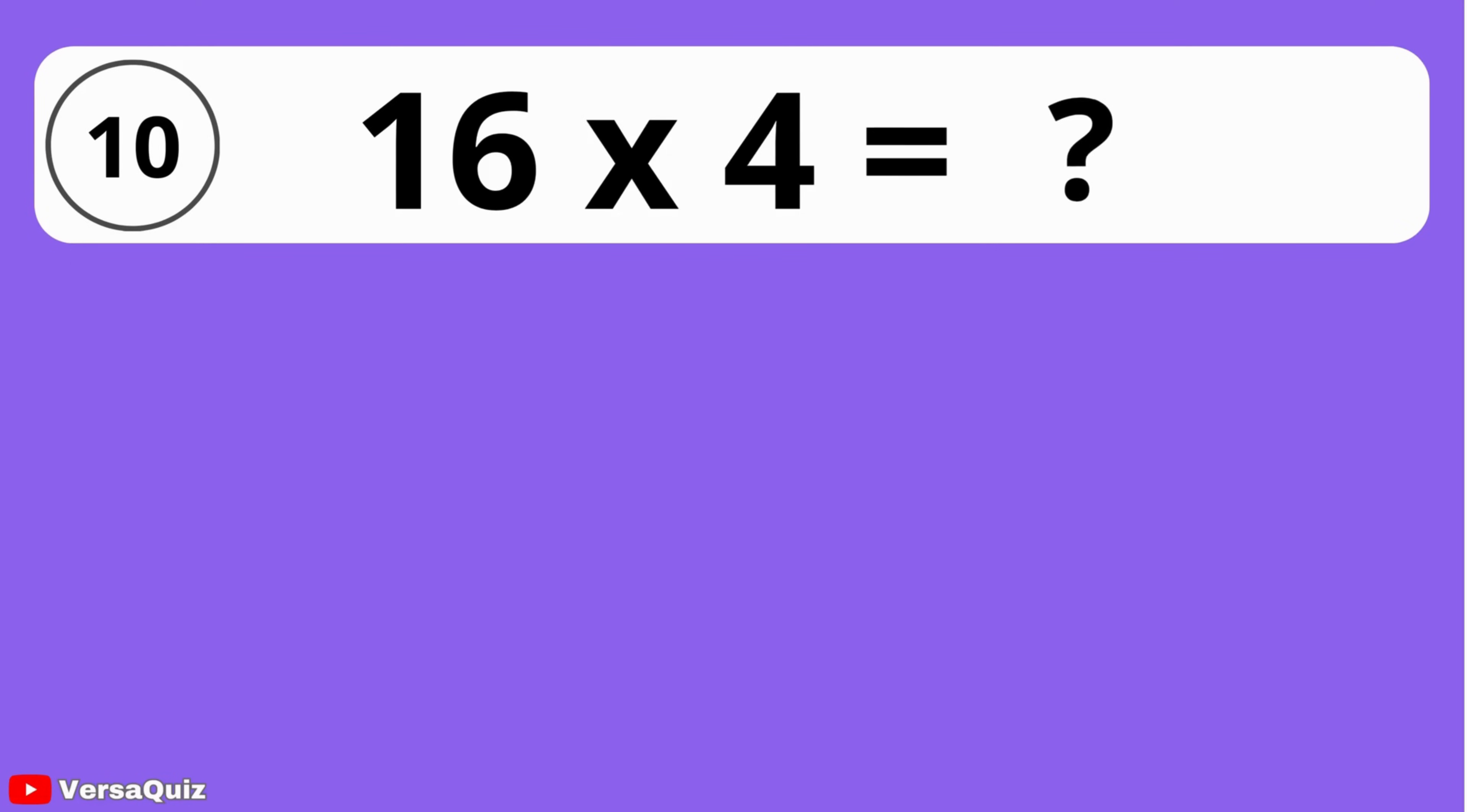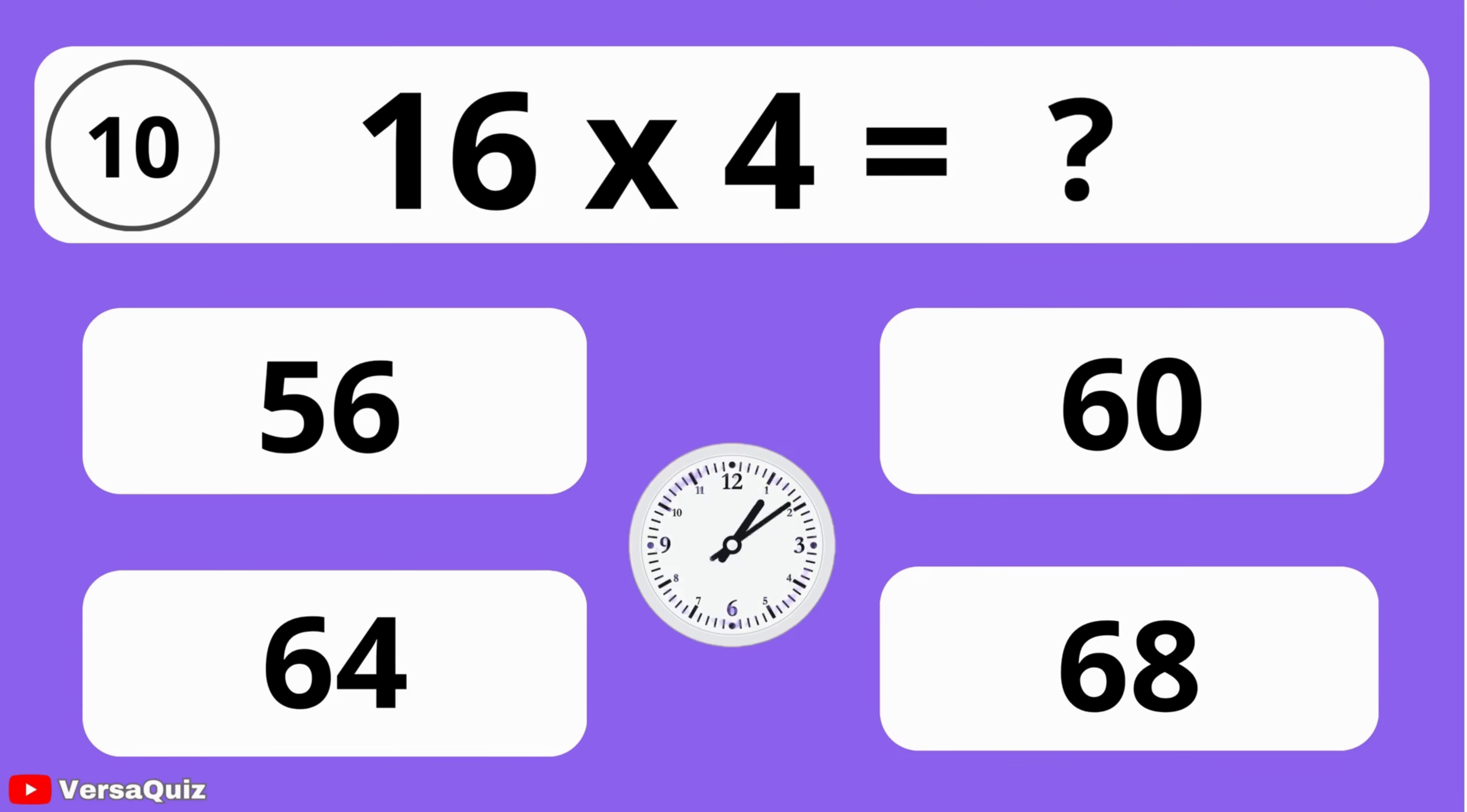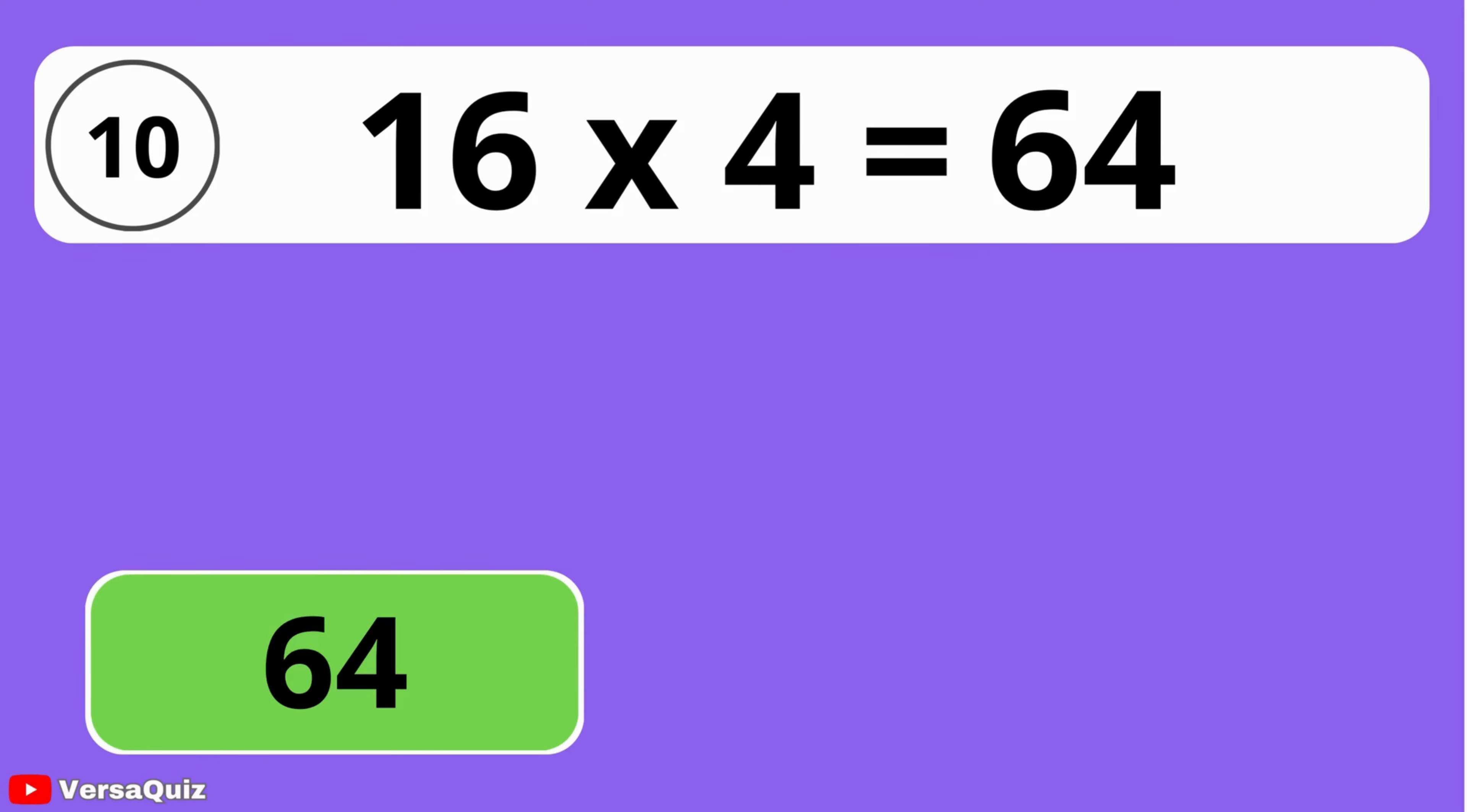What is the product of 16 and 4? 56, 60, 64, or 68? The answer is 64. When you multiply 16 by 4, you get 64.